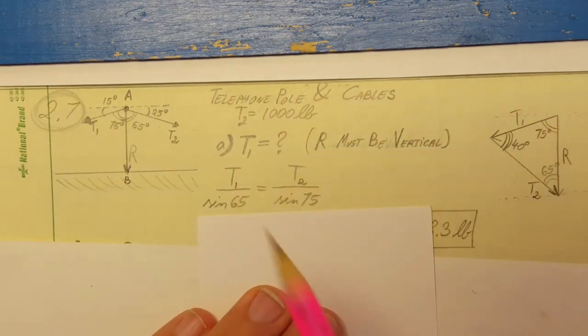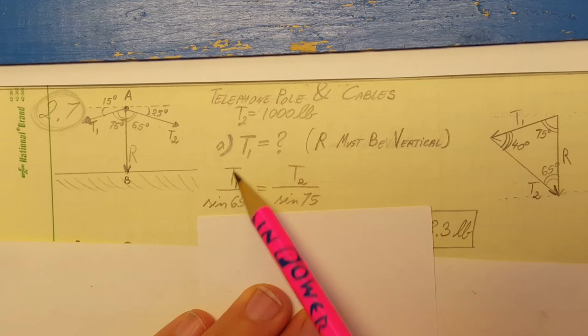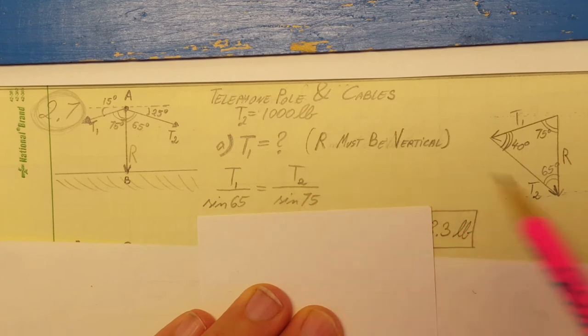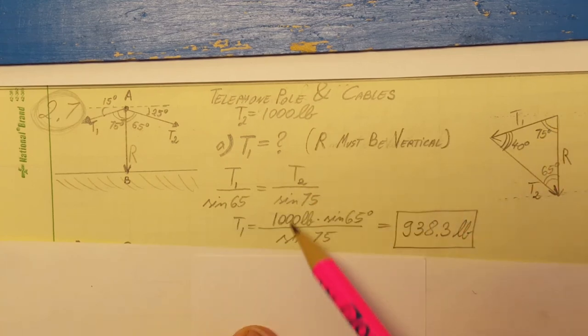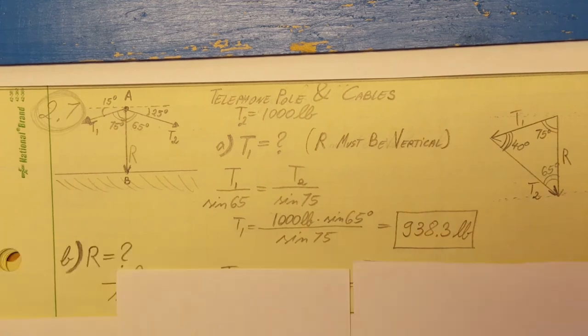We're going to write T1 over sine 65 equals T2 over sine of 75. We're going to solve for T1, and with a calculator we're going to get 938.3 pounds.